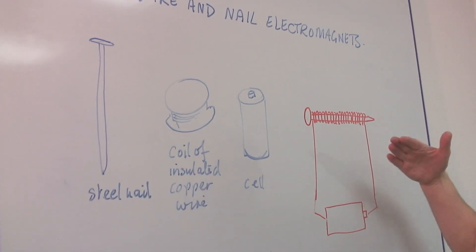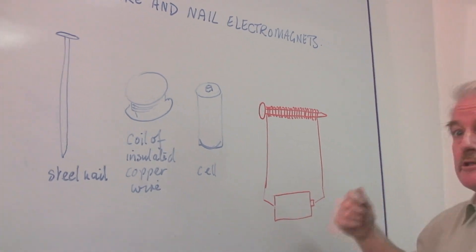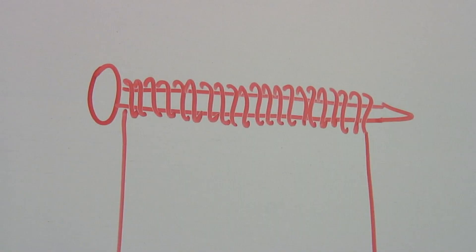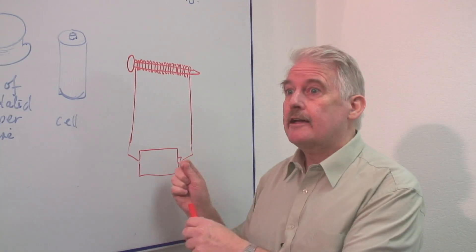If that happens, uncoil it, and then coil it round the opposite way. And you can demagnetize it, so that you can start again with your electromagnet.